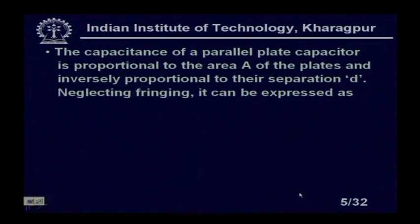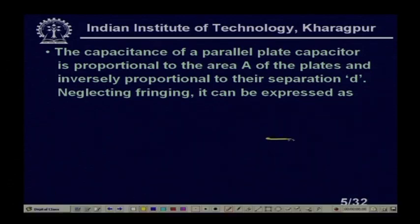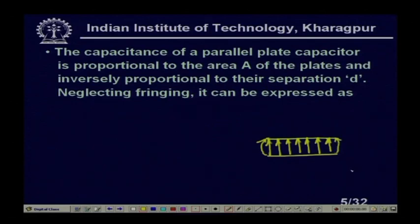The capacitance of a parallel plate capacitor is proportional to the area A of the plates and inversely proportional to their separation D. For cylinders, D is the difference between the outer and inner radii. Neglecting the fringing effect - which occurs at the edges of the plates and for which there is no exact mathematical expression - the capacitance can be expressed mathematically.